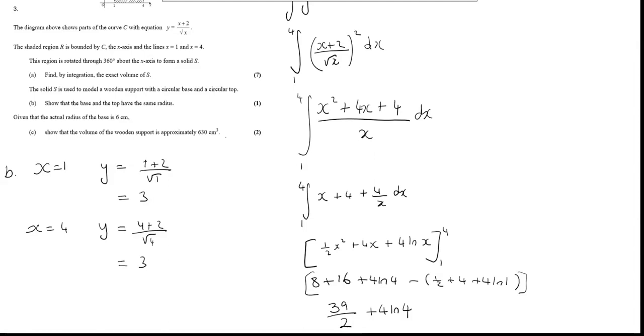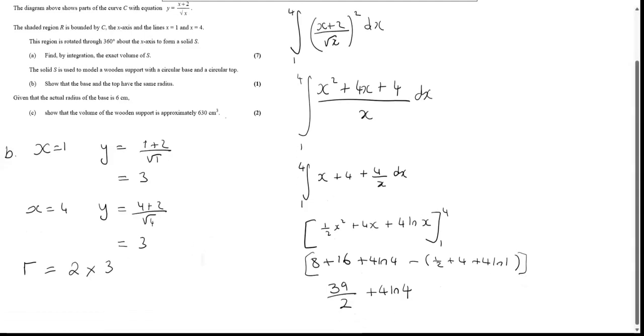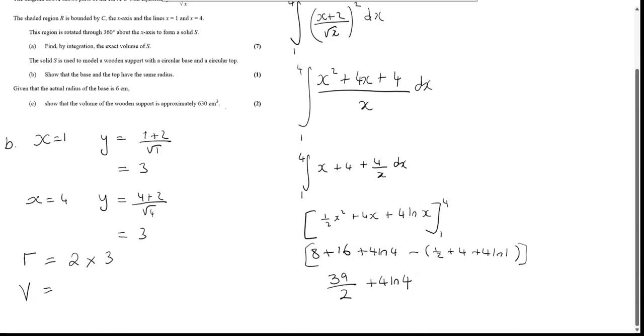Given that the actual radius of the base is 6, show that the volume of the wooden support is approximately 630. Well, if the radius, when I subbed in the x-coordinate, I got a radius of 3, but the radius is actually 2 times 3, which is our 6. So therefore the volume must be, because the length was doubled, then the volume must be cubed to give us our answer.